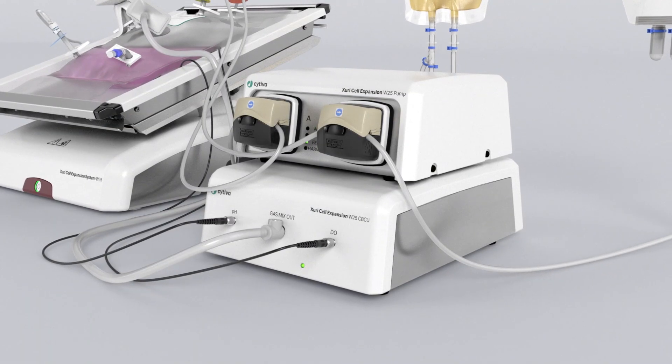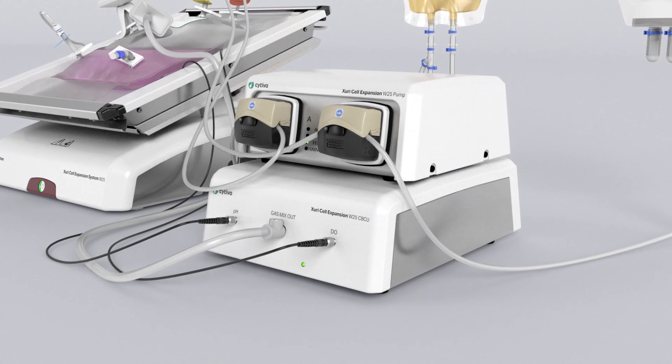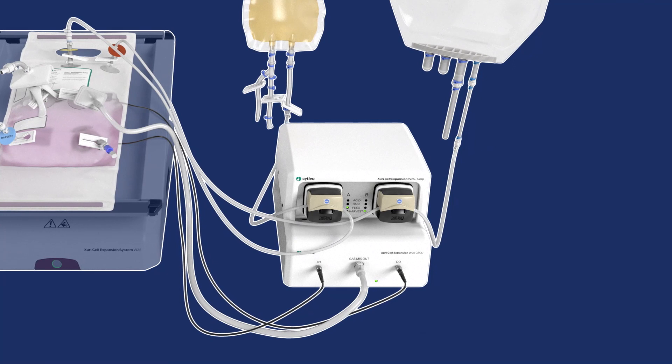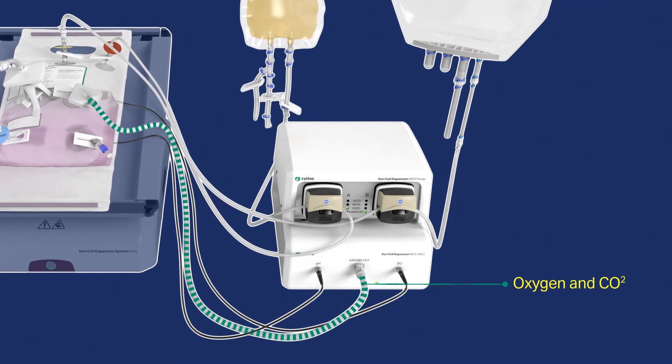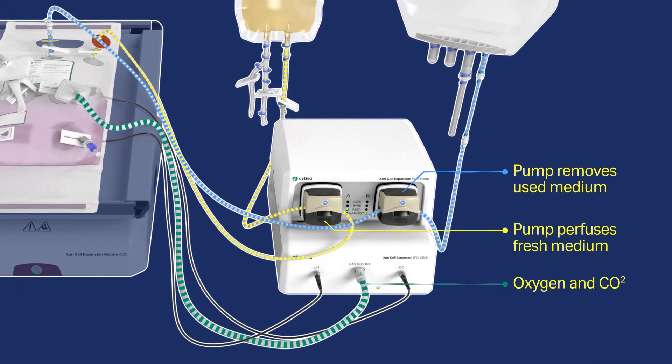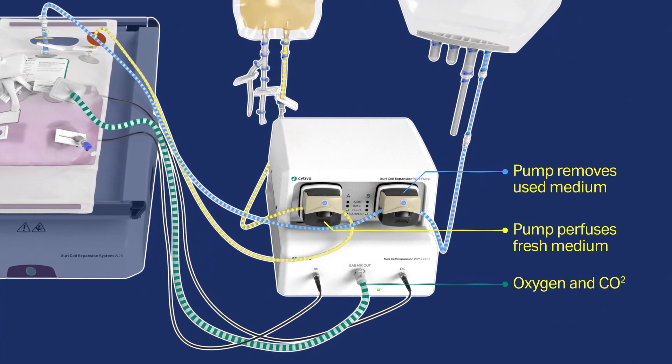The cell bag control unit, CBCU, and Zuri W25 pump control the environment in the bioreactor. The CBCU regulates how much oxygen and carbon dioxide flow into the culture, and the pump perfuses fresh medium and removes used medium.